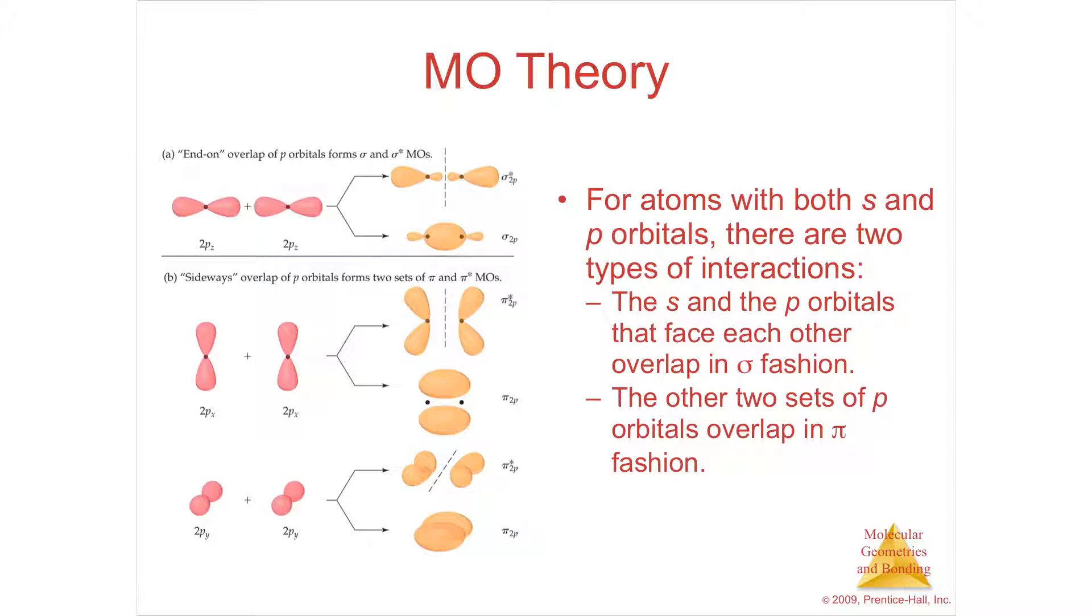The p orbitals are configured in three directions: x, y, and z. The z direction are going to be end on, so if these two overlap, it's essentially a sigma bond. We're going to call that sigma 2p and sigma star 2p. You have the bonding here where they're in between and the antibonding where there's nothing in between.